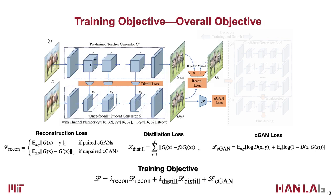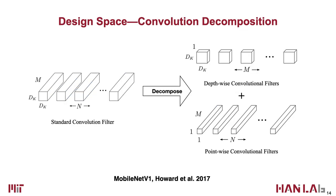We optimize these three objectives together. Nevertheless, we find that naively shrinking the channel numbers fails to produce a compact student model. The performance starts to degrade significantly above four times computational reduction. Choosing a well-designed student architecture is critical for the final performance. Existing generators usually adopt vanilla convolutions following the design of classification and segmentation CNNs. An efficient alternative design is depthwise and pointwise decomposition.